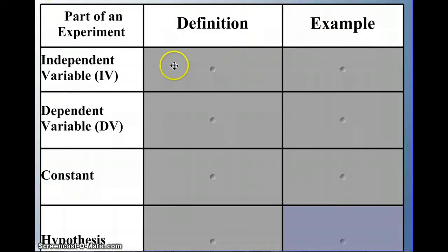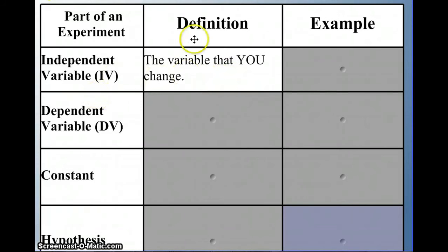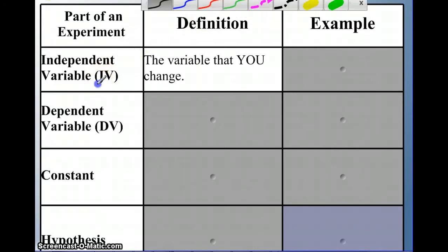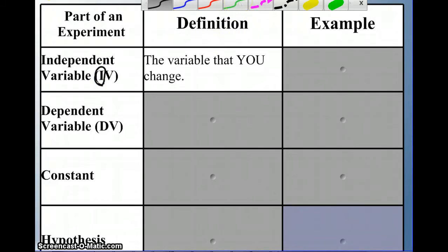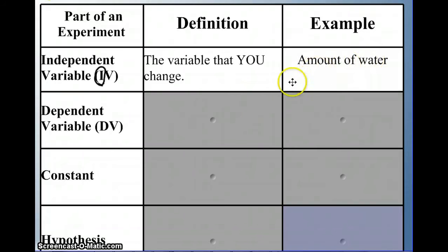An independent variable is the part of the variable that you, the experimenter, are changing — the change that you're doing and want to see the effect of. I remember independent variable because it's what I am changing — it has an 'I' in it. An example using our question: the amount of water is the independent variable in this experiment. We are changing the amount of water to see the effect.